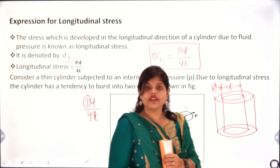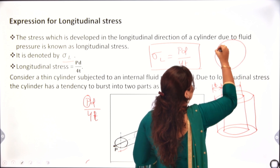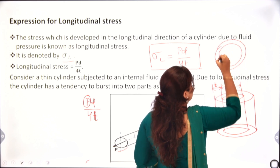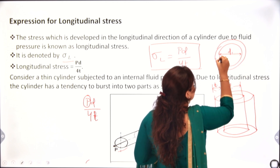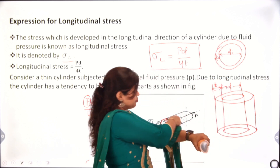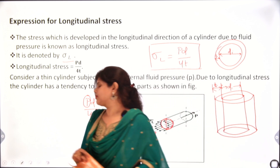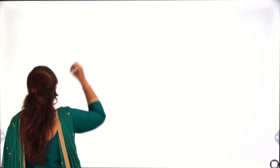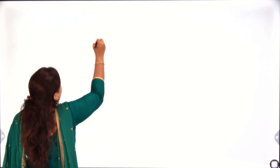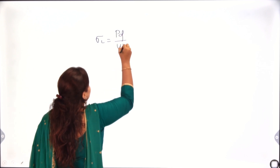If we see the top view, we will see one circle — here is our inside diameter and this to this is our thickness. To solve this, we have sigma L equals PD upon 4T. Our inside pressure has a high amount of pressure.